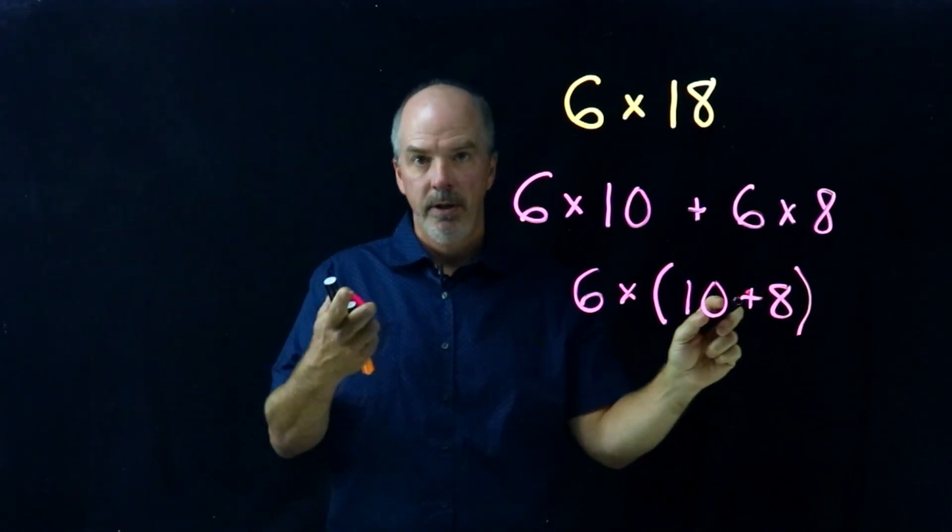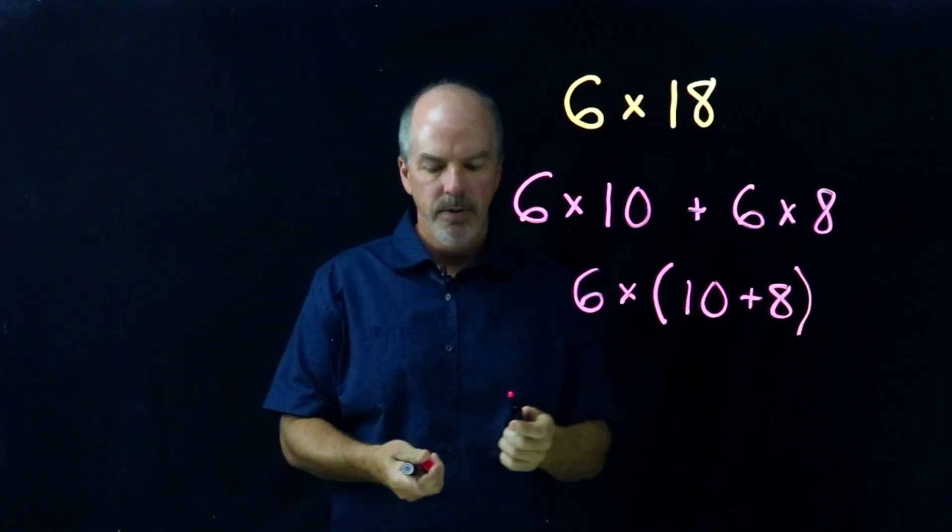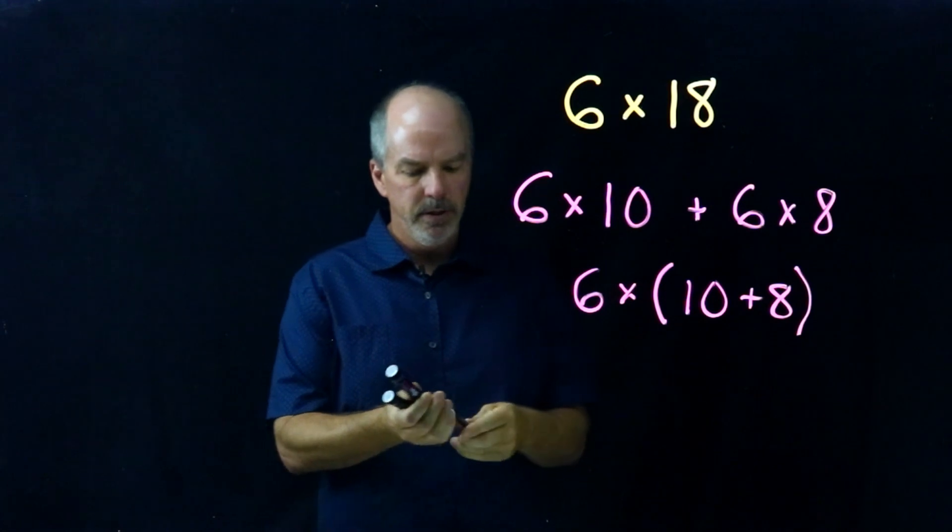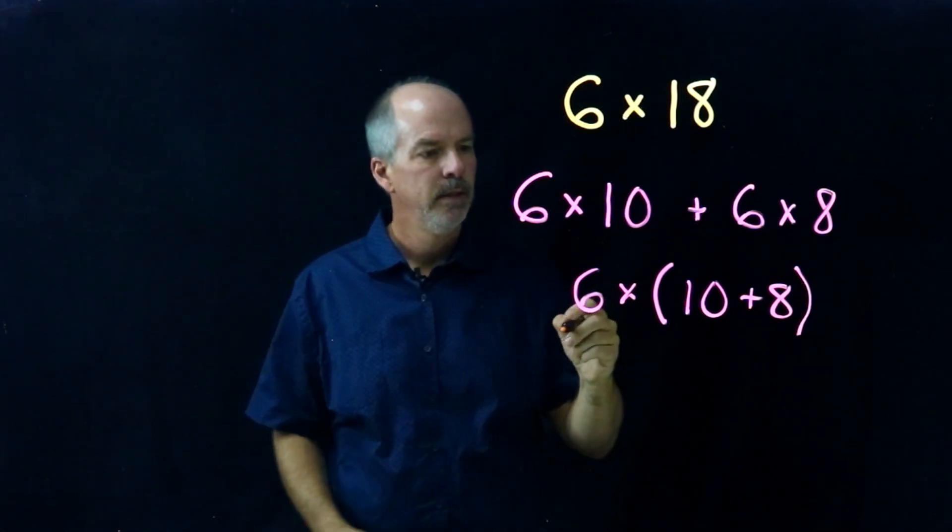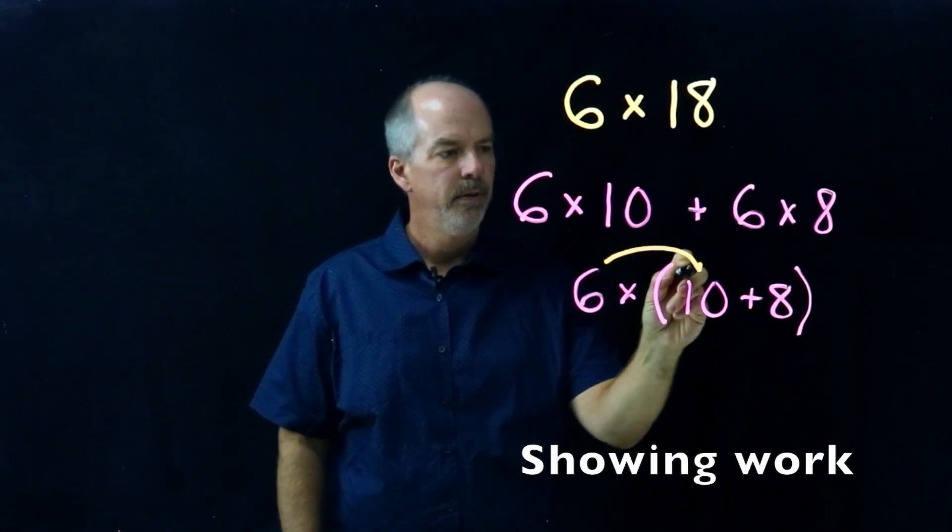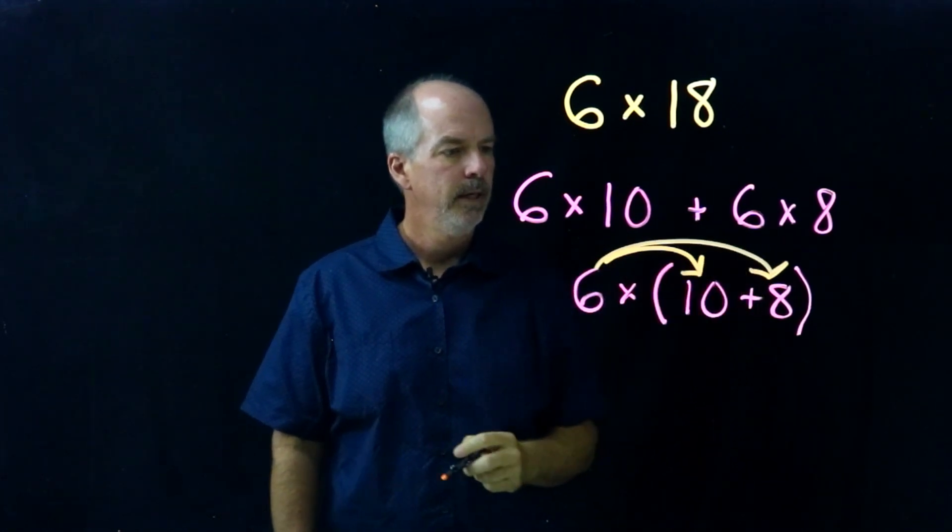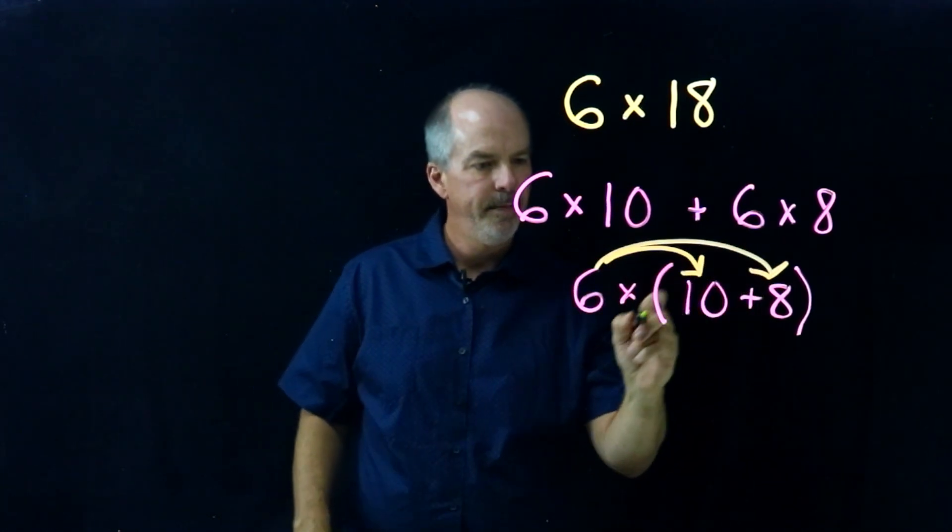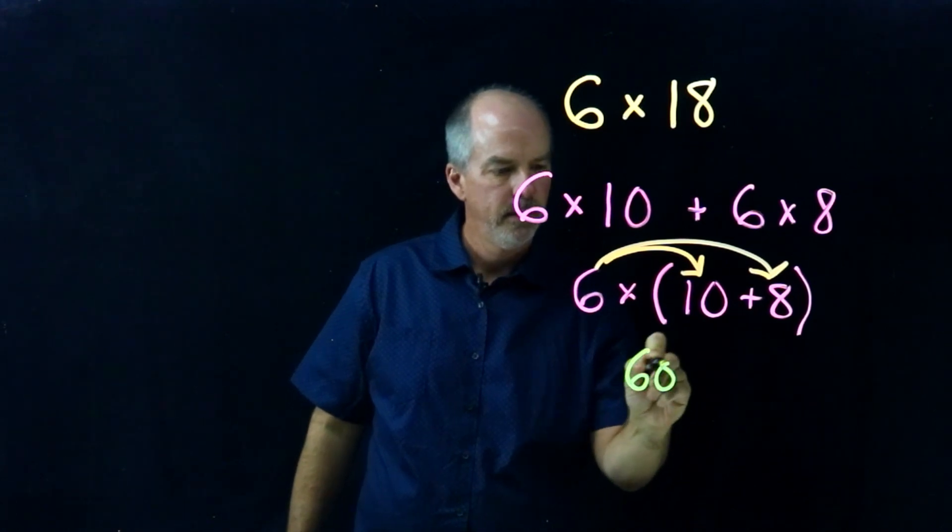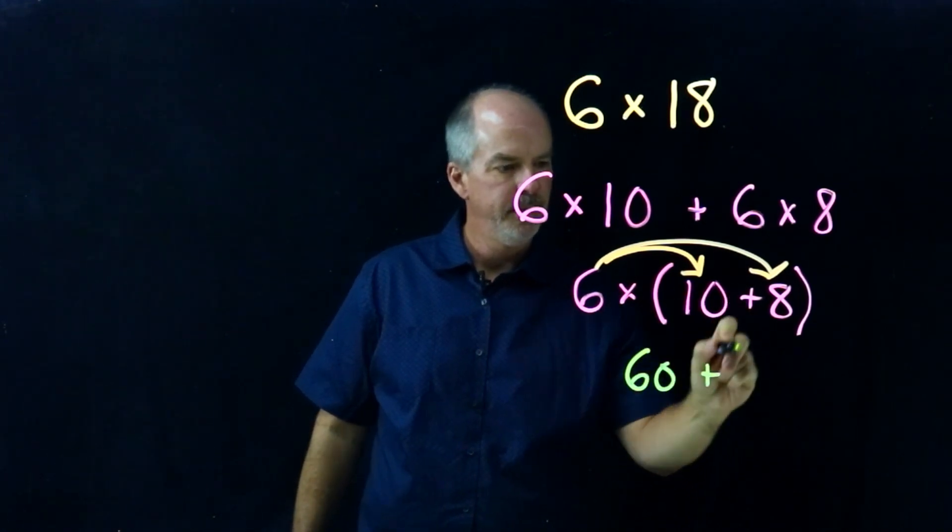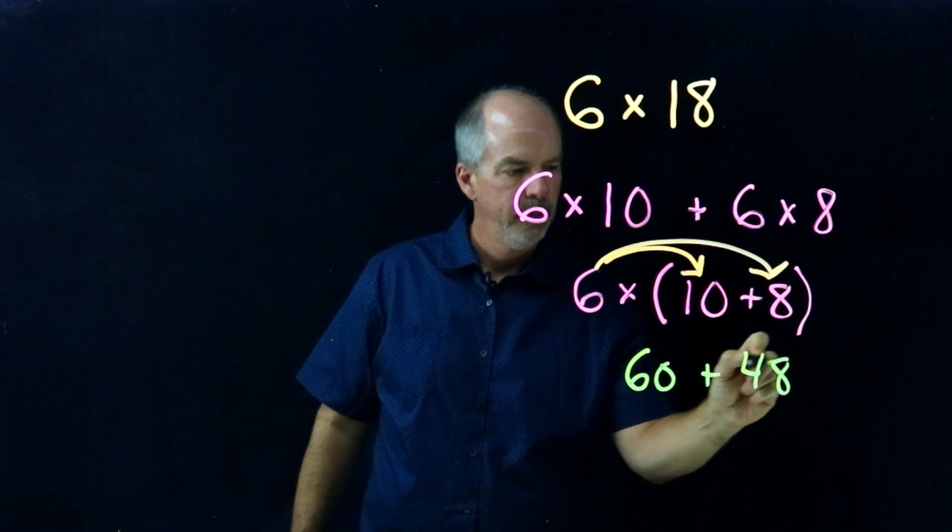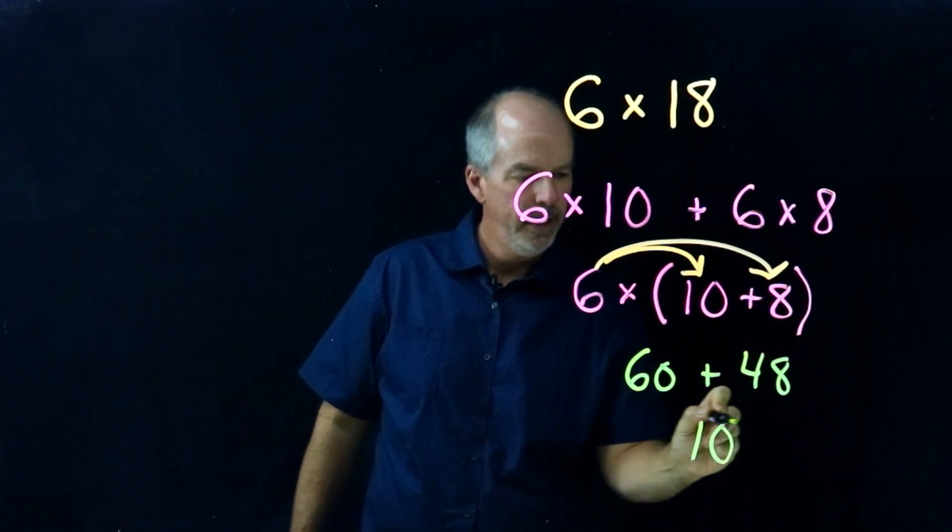And that's right where we were earlier on our problems. So now I'll distribute the six into the parentheses. And I get six times ten is sixty, plus six times eight is forty-eight, and add those together and get one hundred and eight.